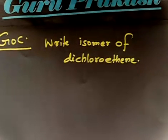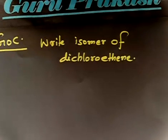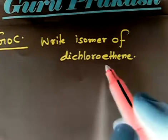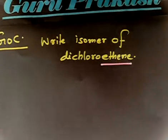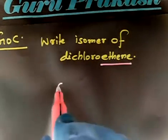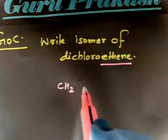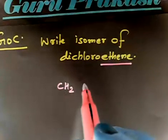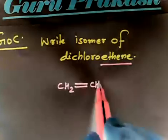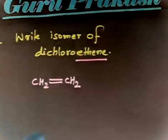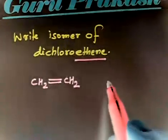So you have to write isomers of dichloroethene. Ethene, not ethane. This is the easy one. So you see what is the possible isomer you will have. CH2 double bond CH2. This is ethene. Now I have dichloro so I have to give two chlorines.